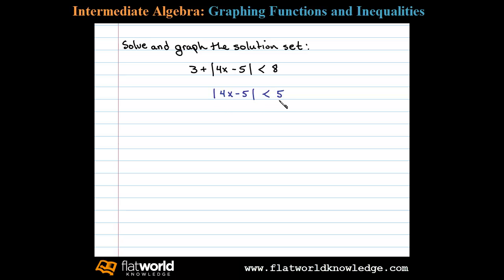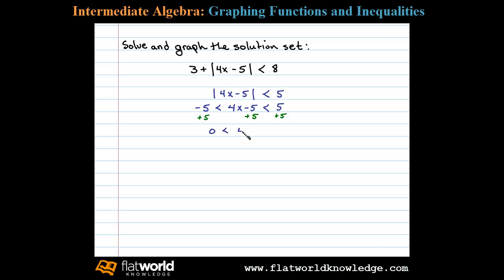Here we have an absolute value less than a number, and we can write that as a compound inequality: negative 5 is less than the argument 4x minus 5, which is less than 5. To solve this compound inequality, the first step is to add 5 to all parts, leaving us with 0 is less than 4x, which is less than 10.